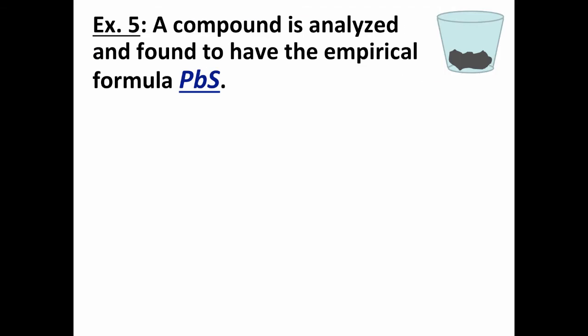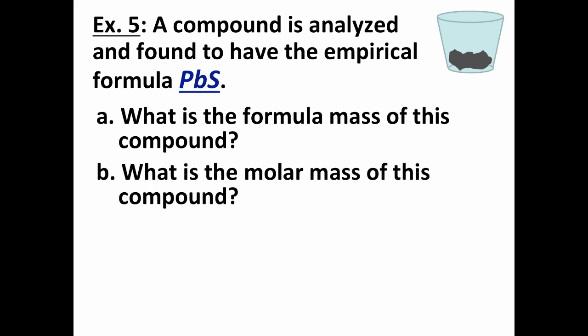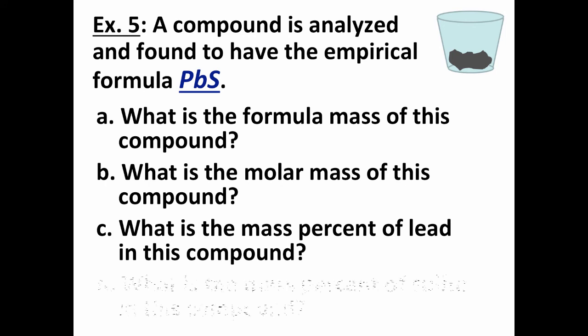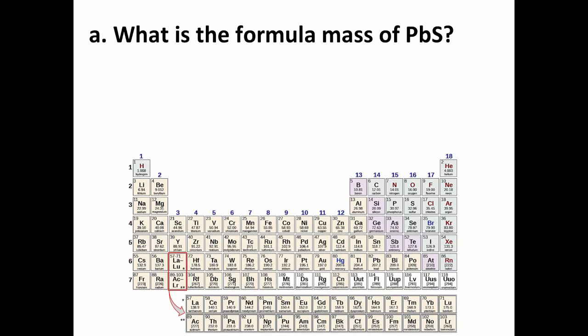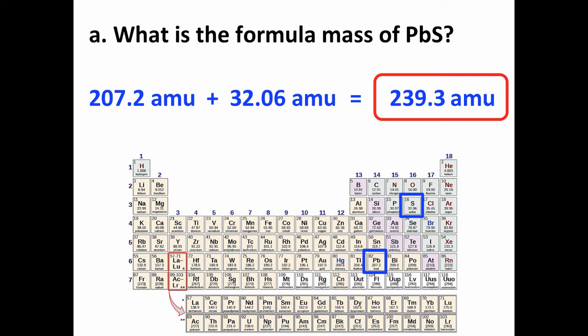Now that we've determined the empirical formula of this compound, let's also find its formula mass, its molar mass, and the mass percent of lead and sulfur in this compound. First of all, the formula mass is the mass of either one molecule if we're dealing with a molecular compound, or one formula unit if we're dealing with an ionic compound, which is what we have in this case. So the formula unit for PbS, for lead(II) sulfide, is one lead ion and one sulfide ion. The mass of one lead ion is essentially the same as the mass of one lead atom, which is 207.2 amu. The mass of a sulfur atom is about the same as the mass of a sulfide ion, 32.06 amu. Add those together: 239.3 amu. So the basic unit, the fundamental unit of this compound, the formula unit, has a mass of 239.3 amu.